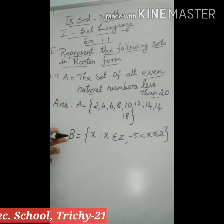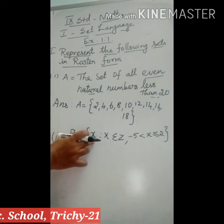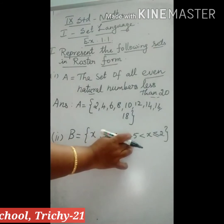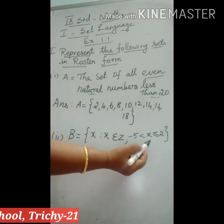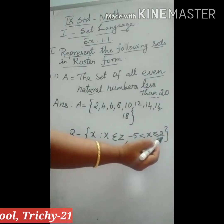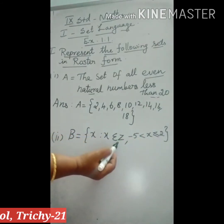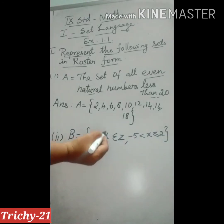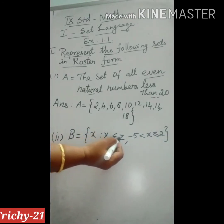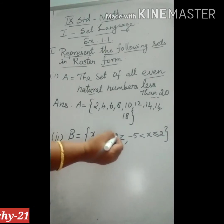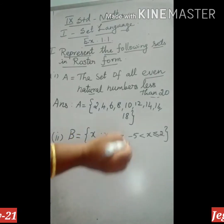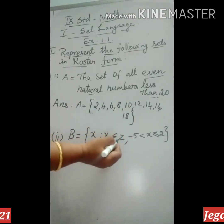The second question is: B is equal to {X such that X belongs to Z, -5 < X ≤ 2}. What is the condition given? First, Z — what is Z? Z denotes integers. What are integers? Negative numbers, positive numbers, including 0, are called integers.